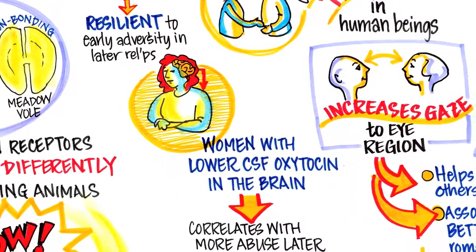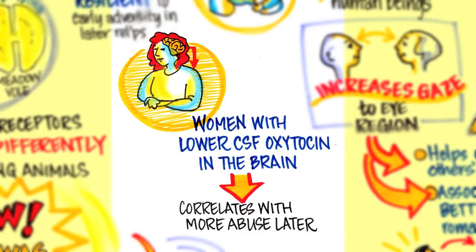This is a study we did a few years ago at Emory, where we looked at women — not voles. These women, in their early life as children, experienced abuse and neglect. We sampled the oxytocin levels in their CSF — their cerebral spinal fluid. What we found is that people who experienced more abuse and neglect actually had lower levels of oxytocin in their brain when they became adults. So early life nurturing experiences can have a long-term impact on the brain, particularly in areas involved in social relationships.